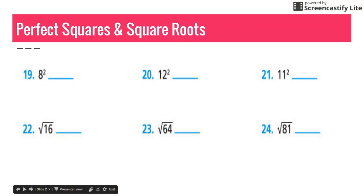If you look at number 19, we have 8 squared. When you look at the exponent, it's a 2, so all that really means is we have 2 eights. It's like taking 8 times 8, and it equals 64.